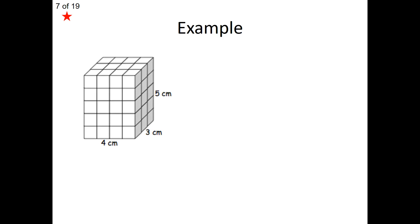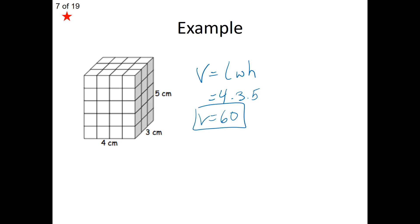Let's do an example. This is a right rectangular prism, so we find the volume by multiplying length times width times height. We have our length, our width, and our height of 5. Multiply that all through and we get a volume of 60. So the volume of a right rectangular prism is just length times width times height.